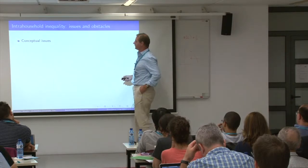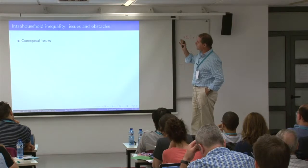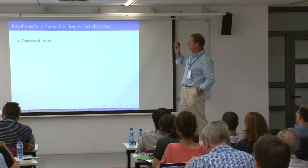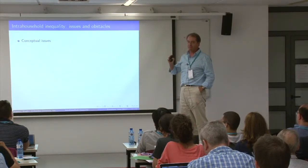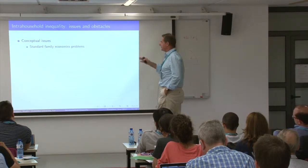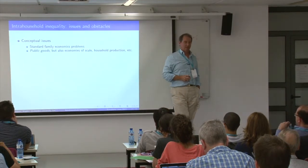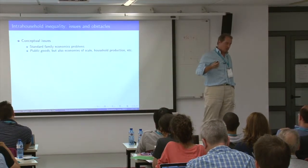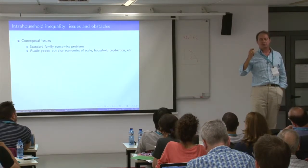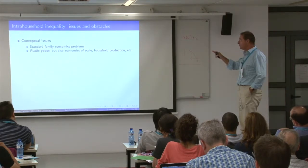Here are the kind of problems when you think about these issues. We have conceptual difficulties and empirical difficulties. The conceptual issues are the standard family economics problem — in particular, public goods. How do you think about, and more precisely measure, inequality in the world when there are public goods?